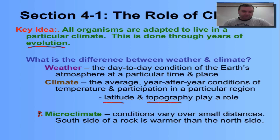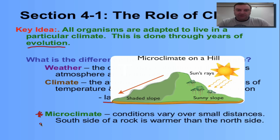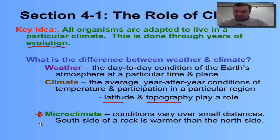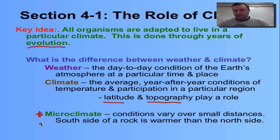I want to draw your attention to microclimate — conditions that can vary over small distances. Think about the house that you live in. The south side of your house is on average going to be much warmer and sunnier than the north side. On my south side, we have aluminum siding which reflects more heat, so that side gets pretty warm even in winter — the snow melts closer to the house. On the north side, that snow is going to be the last to melt into springtime. Even in summer, the south side is probably 10 degrees hotter than the north side. That's what we call a microclimate.